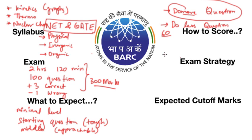The core exam strategy is: read each question and answer it if you can. If a question is taking too long, leave it and move on. Don't stick to one question for too long. Try to at least read all 100 questions — that way you can identify and attempt the easier ones first, rather than getting stuck on hard questions at the start and running out of time.